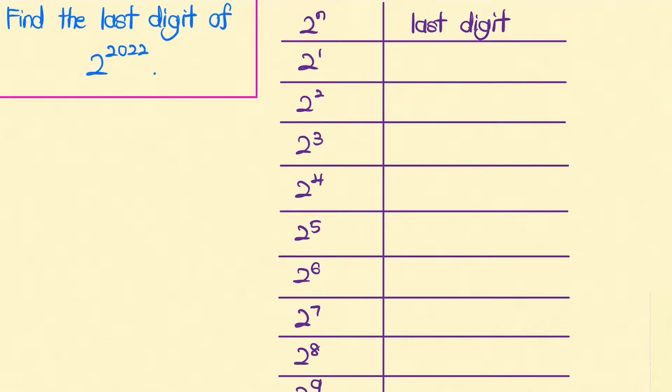Let's solve a classic number theory problem where we need to find the last digit of the number 2 to the power of 2022.